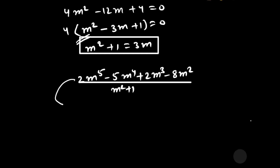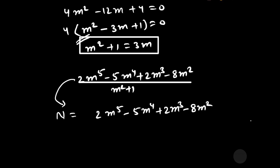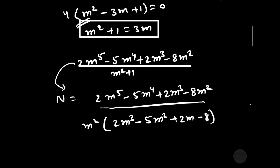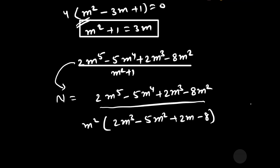Let us solve the numerator: 2m⁵ − 5m⁴ + 2m³ − 8m². We can take m² as a common factor from the whole expression, giving m² times (2m³ − 5m² + 2m − 8). We know m² + 1 = 3m, so m² = 3m − 1. We will substitute this value.